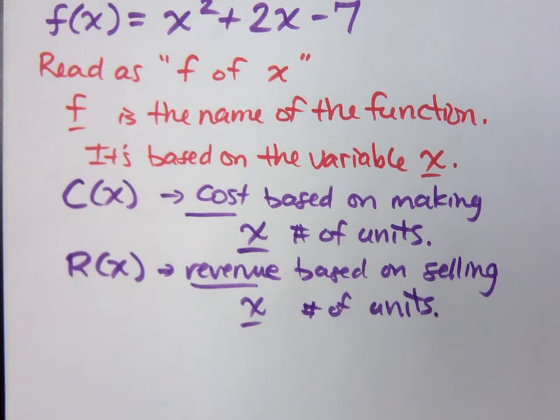That way, if someone were to see that given the proper context, if you're talking about cost, revenue, and profit, if someone sees C of x versus R of x, you don't have to say, hey dude, C of x is cost. They know, right? They should know anyway.